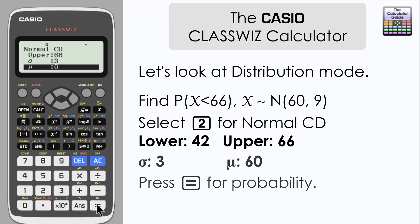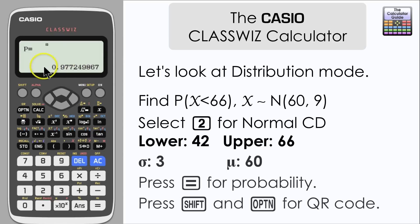We've got a sigma. A standard deviation of 3. Remember that's the square root of the variance of 9. And then we have a mean. A mu value of 60. And then if you press equals. Then the calculator will generate the probability for us. And here we have our probability. So perhaps the three significant figures there. 0.977.